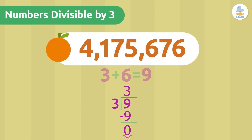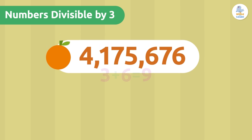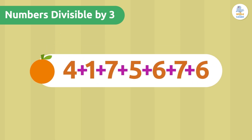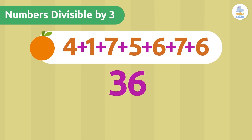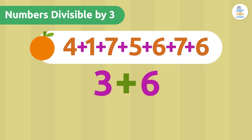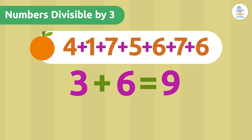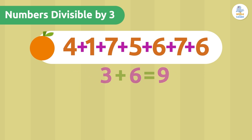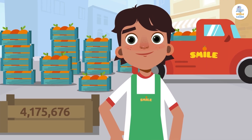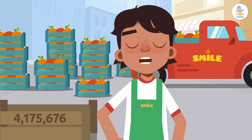When we added the digits of the number of oranges, we got 36. If we add up the digits of 36, we should get a number divisible by 3. 3 plus 6 equals 9. We know that if we divide 9 by 3, the remainder will be 0.